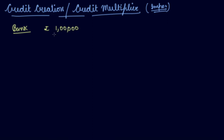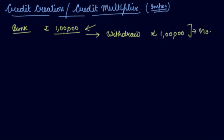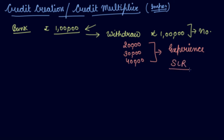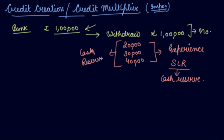If you have a deposit of rupees 1 lakh, will there be a withdrawal of the full 1 lakh in a day? A withdrawal might be of rupees 20,000 or 30,000 or 40,000. So the bank assumes this on experience — this is the SLR, that is the Statutory Liquidity Ratio — the amount of cash that should be reserved by the bank from the deposits. On the basis of experience they keep cash reserves with them.